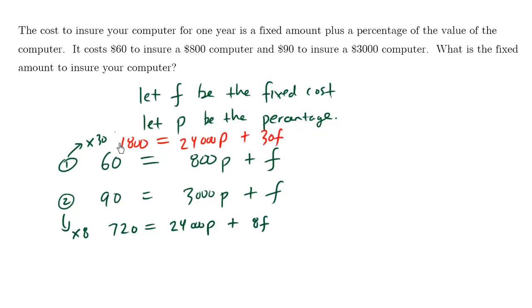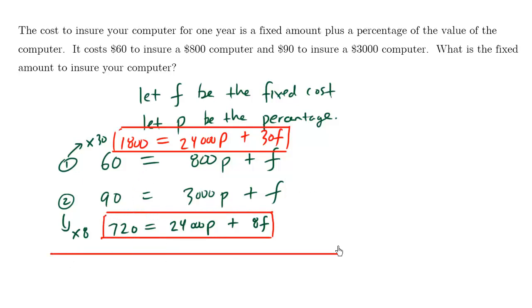So I have this nice red equation, and then I have this equation here, and I'm going to subtract to solve for F. I'm going to subtract downwards.